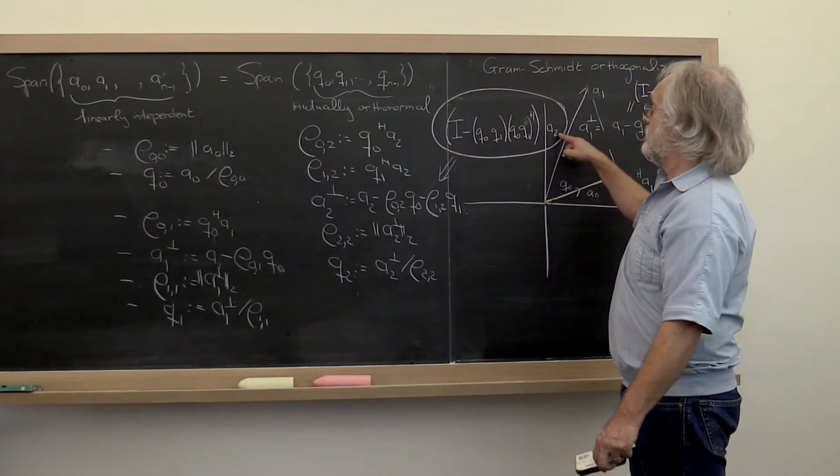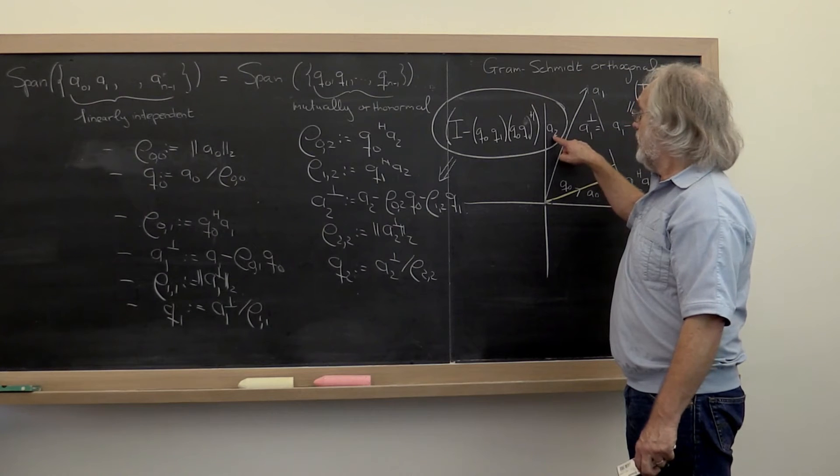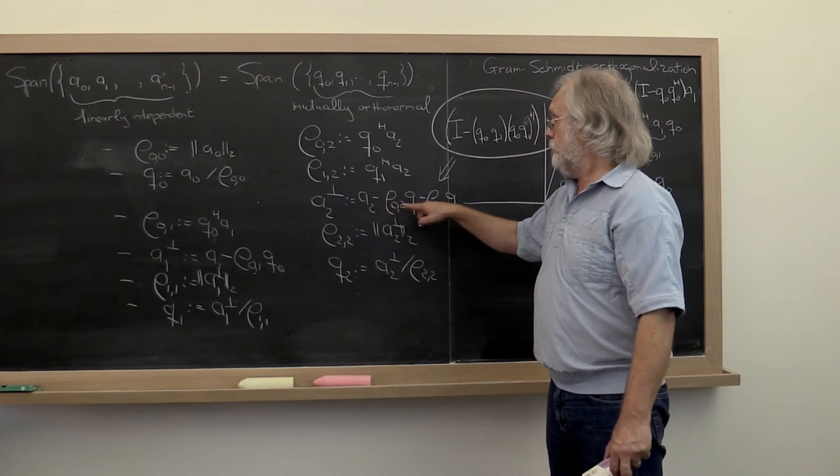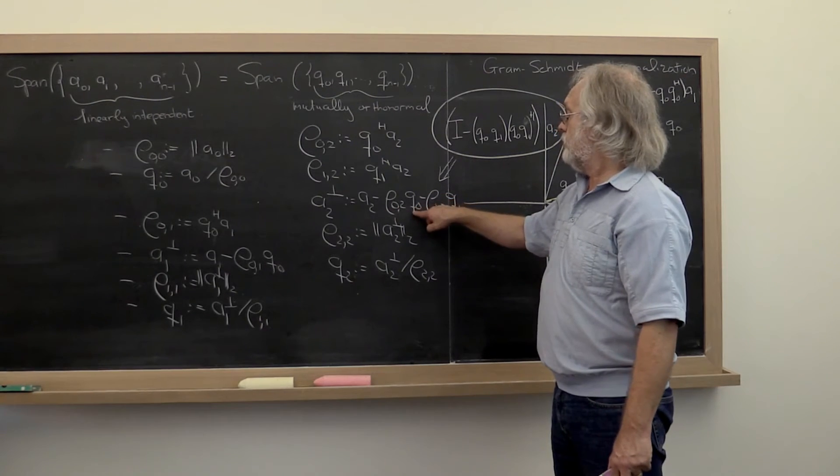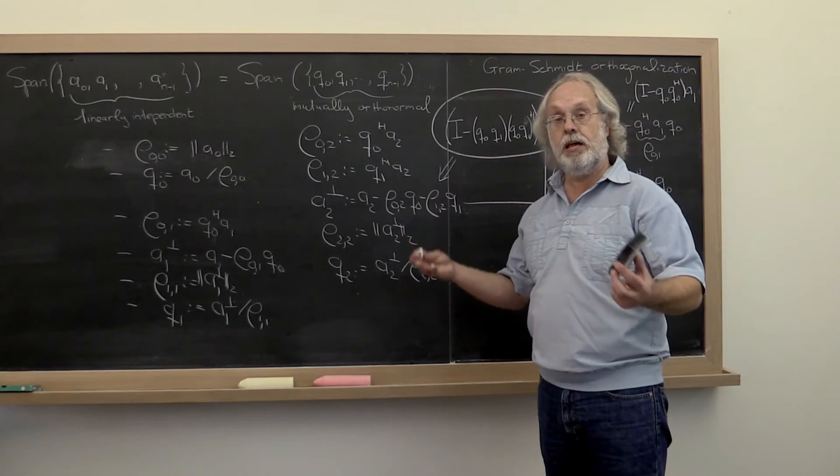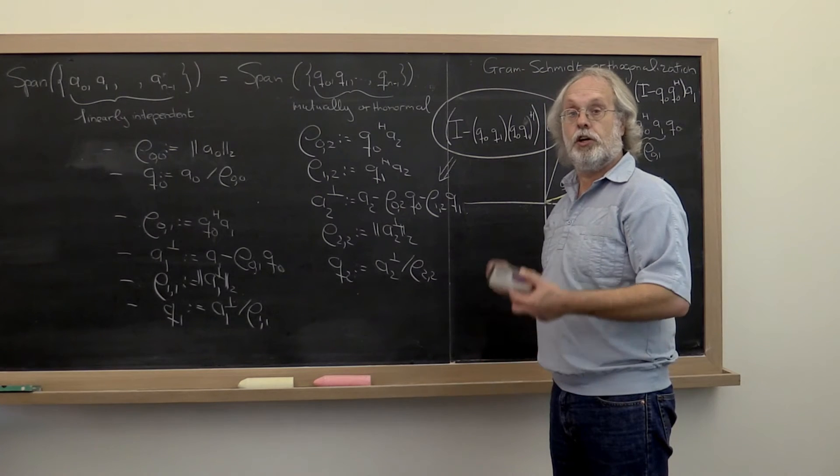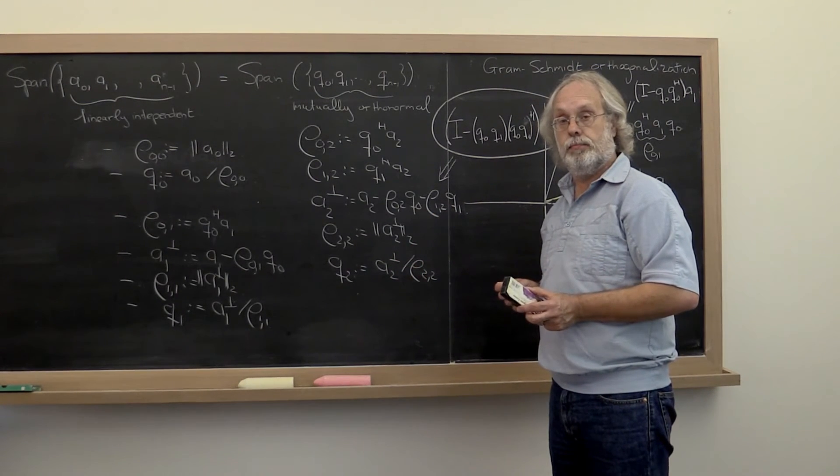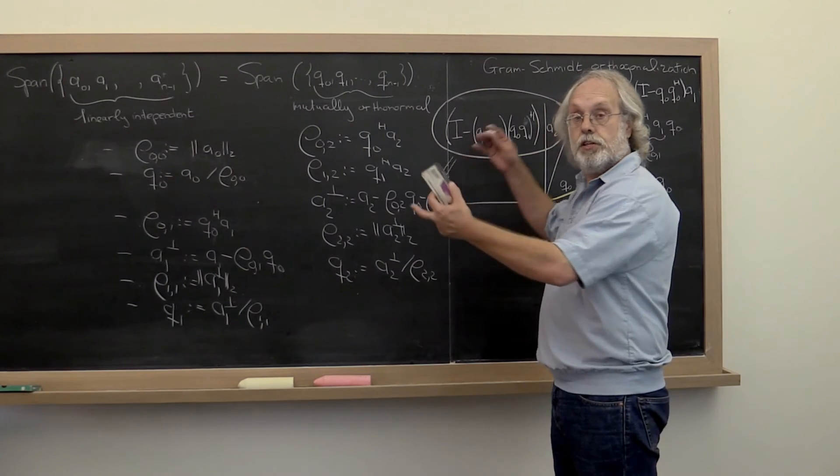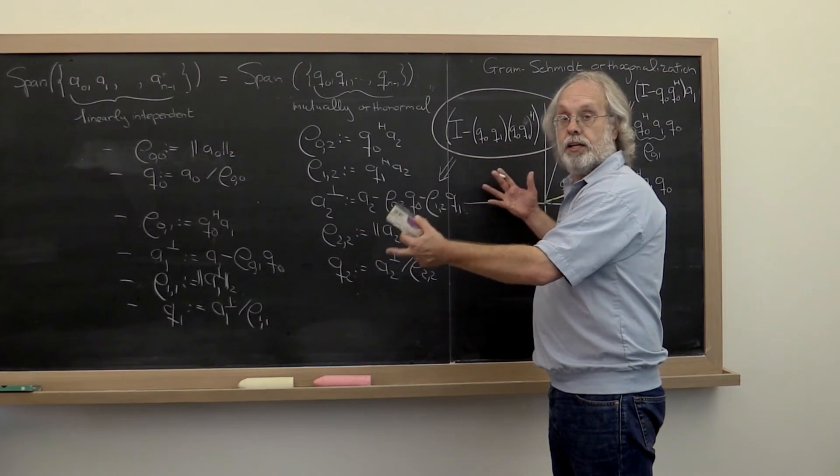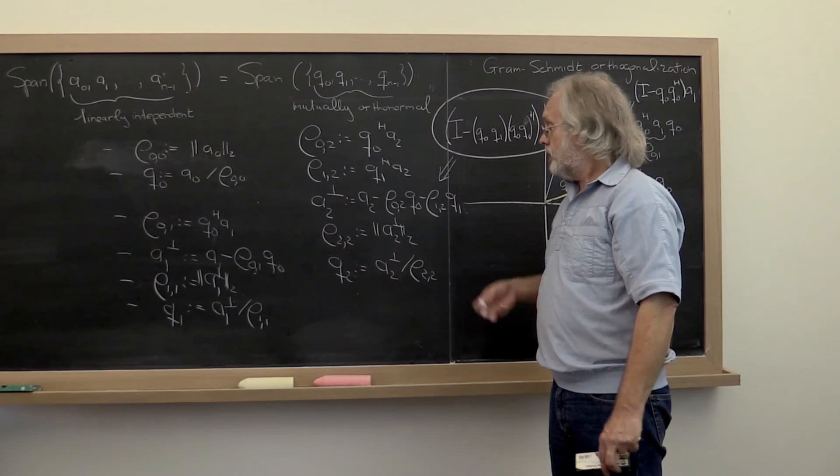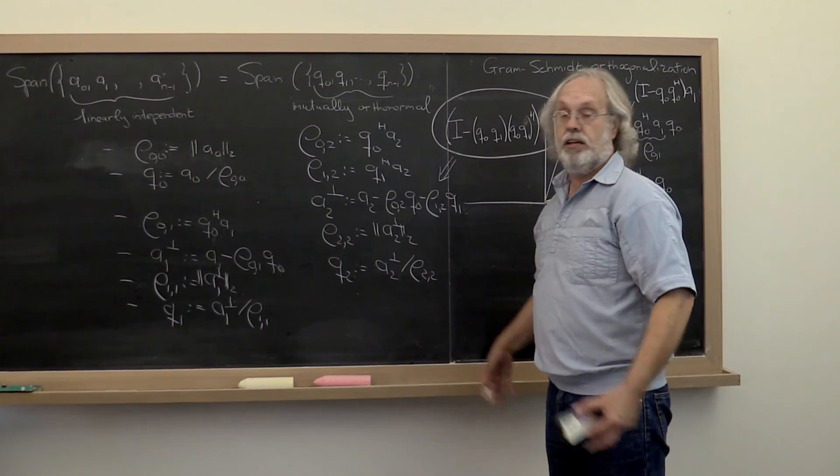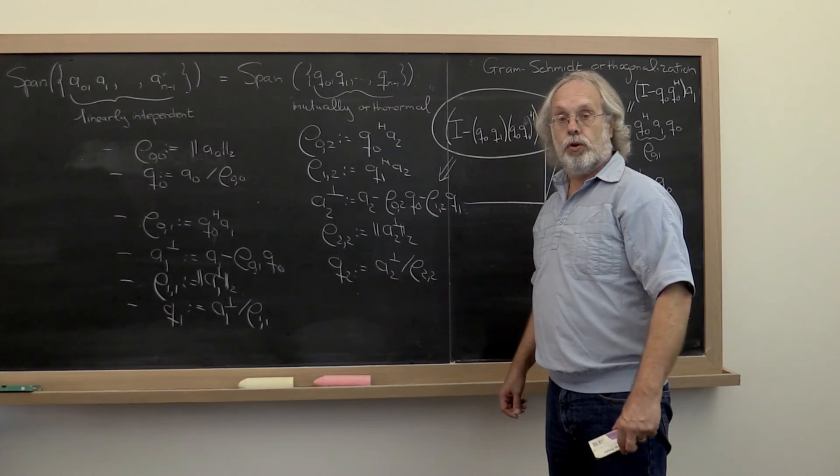Therefore this gives us the component of A2 that is orthogonal, perpendicular, to the space spanned by Q0, Q1. And that's the same as subtracting out the components in the direction of Q0 and Q1. So that's a different way of formulating the same problem. And then obviously you can extend that to vector A3, A4, and so forth.